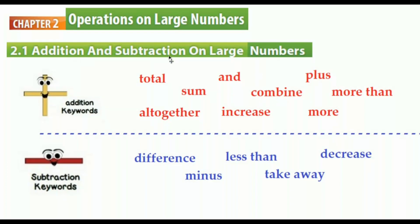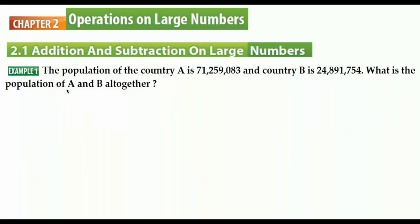Let's look at an example. The population of country A is 71 million 259 thousand 83, and country B is 24 million 891 thousand 754. The question is: what is the population of A and B all together?